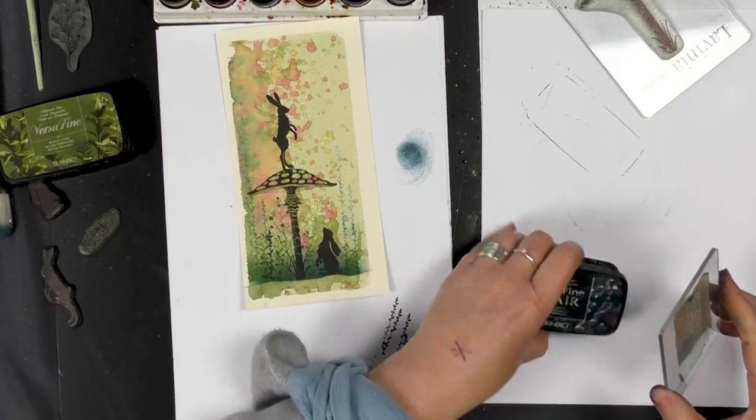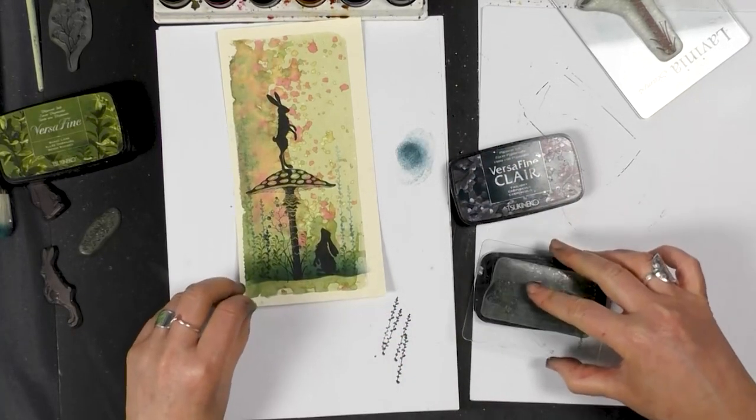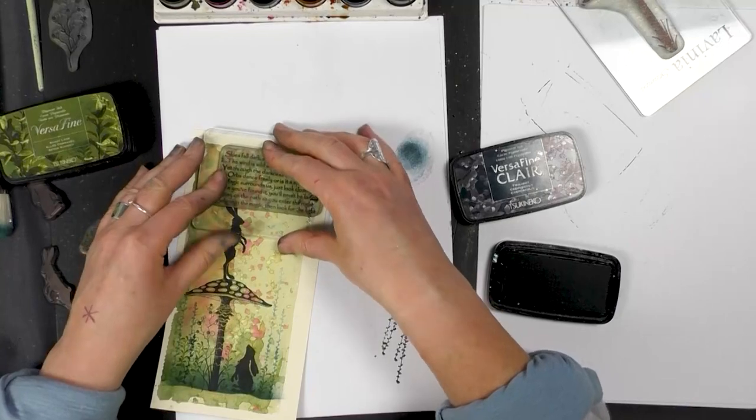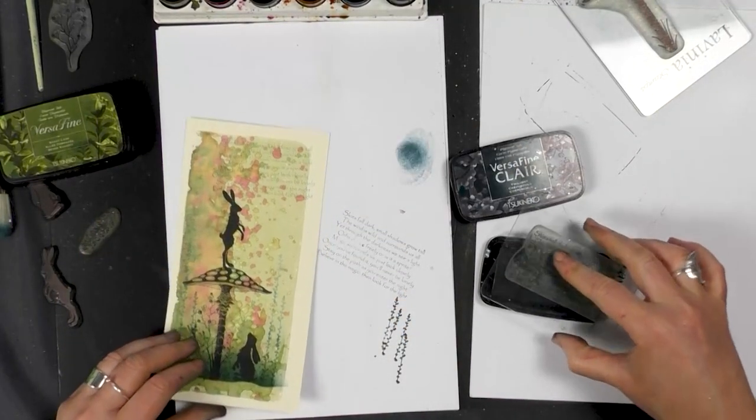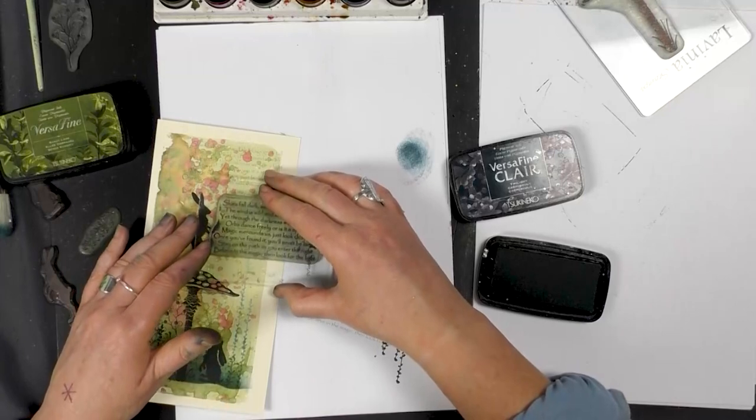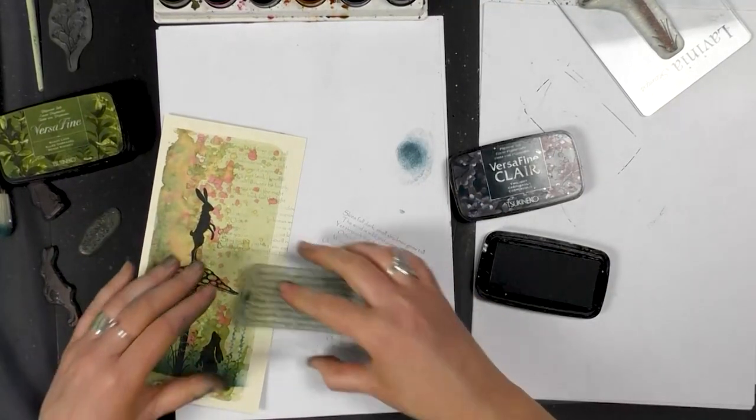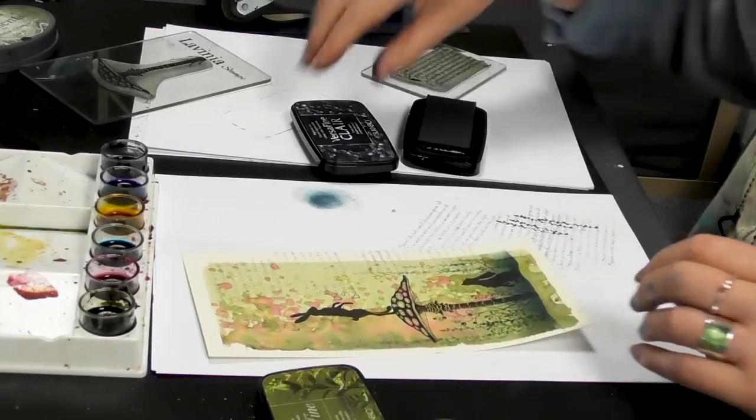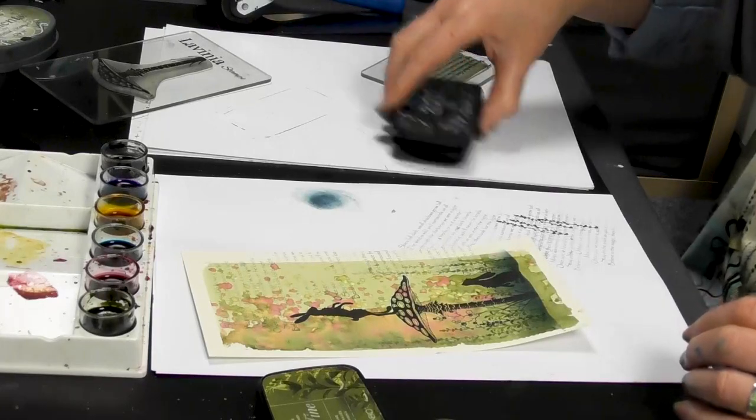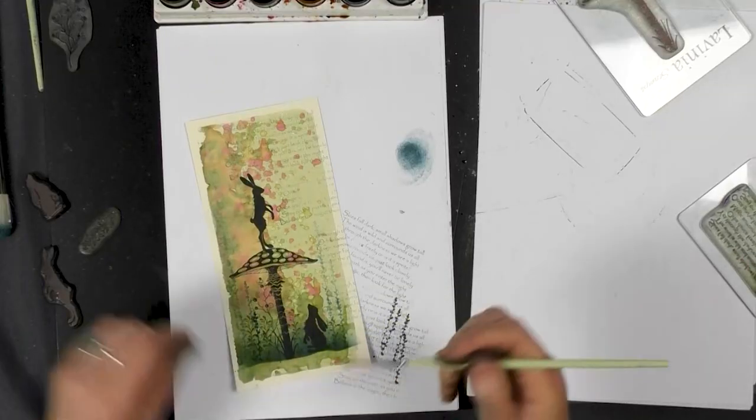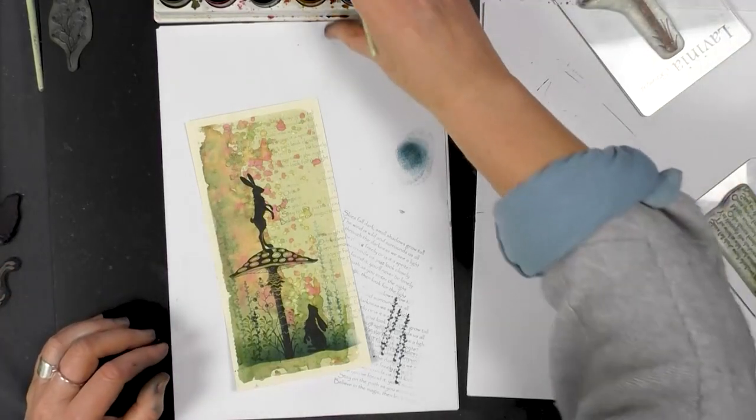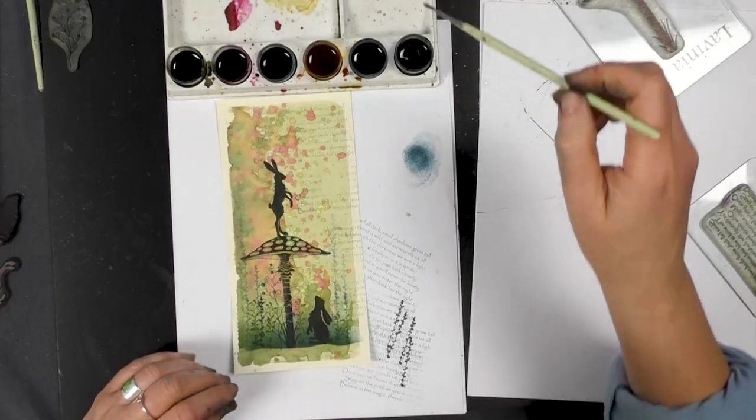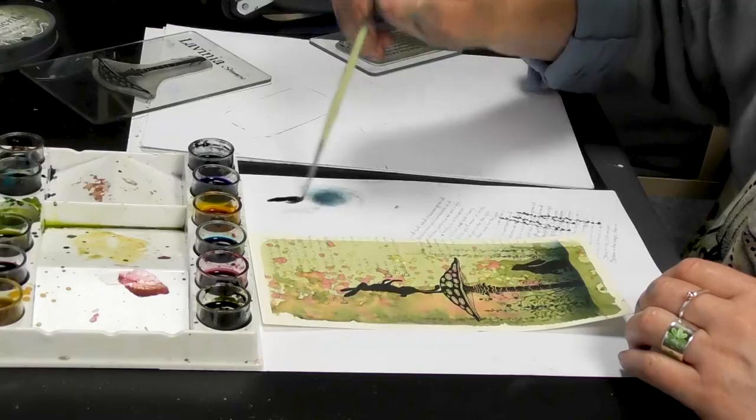I'm going to go back to the twilight. This time I'm going to stamp off as I only want this very much in the background. And now using one of our fine paintbrushes I'm going to go back to the brusho and just picking a colour that I know is going to complement the colours I've used today.